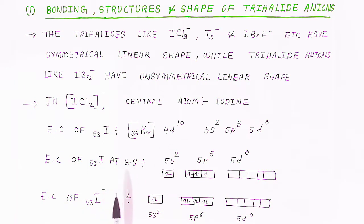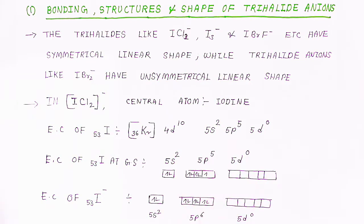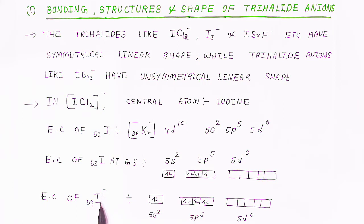When iodine forms a negative ion, it takes one electron. The electronic configuration of the iodide anion (I⁻, iodine 53⁻) becomes 5s², 5p⁶. So 5p⁵ becomes 5p⁶ because one negative charge means one electron is added, giving iodine a negative charge. All electrons are now paired.